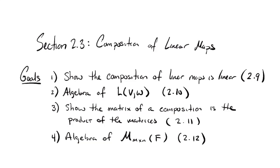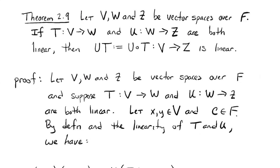We won't be going through detailed proofs of theorem 2.12, but I'm going to try to nudge you into writing down some of those proofs for yourself. Okay, so that's the outline. Let's get going. Theorem 2.9 is our first result. It's about the composition of maps. It looks like it has a complicated statement, but really it's not saying all that much.